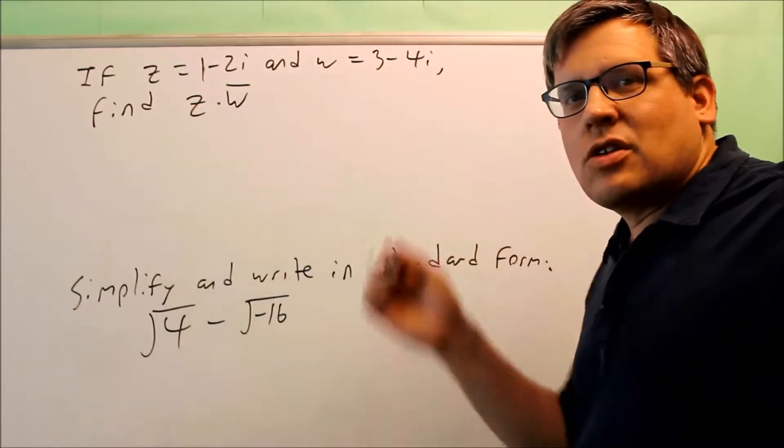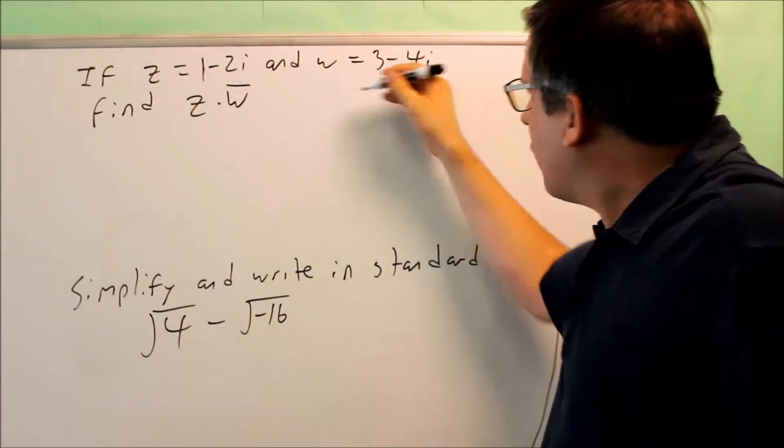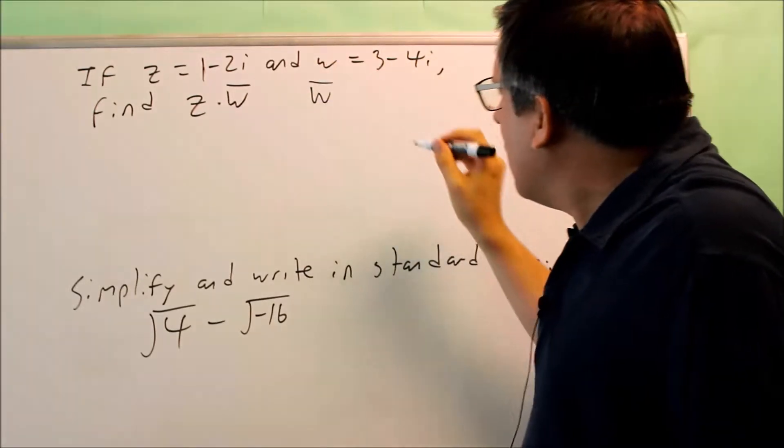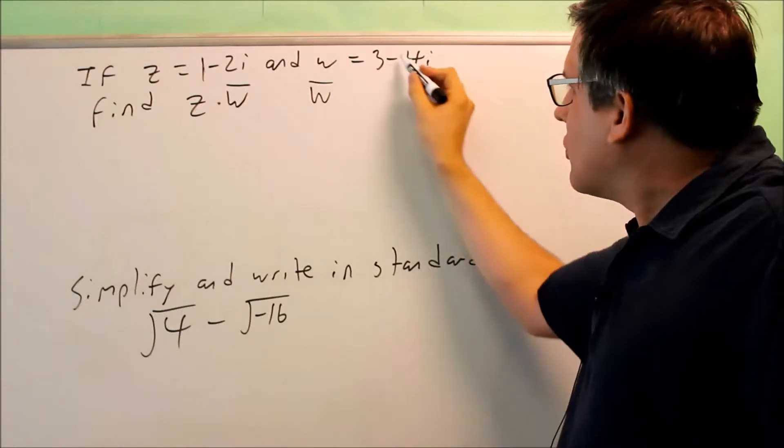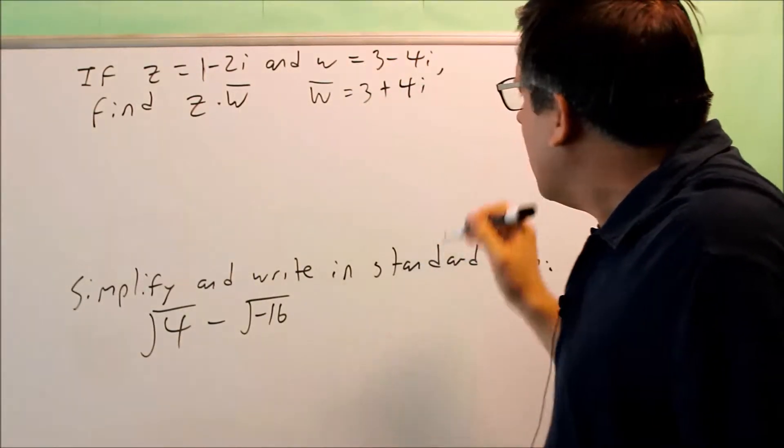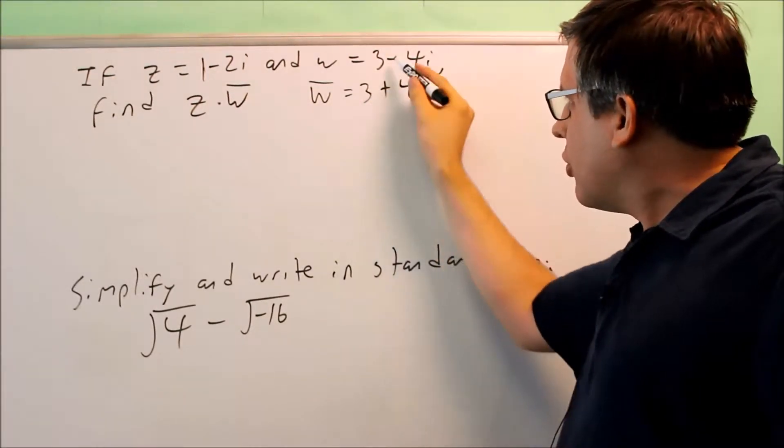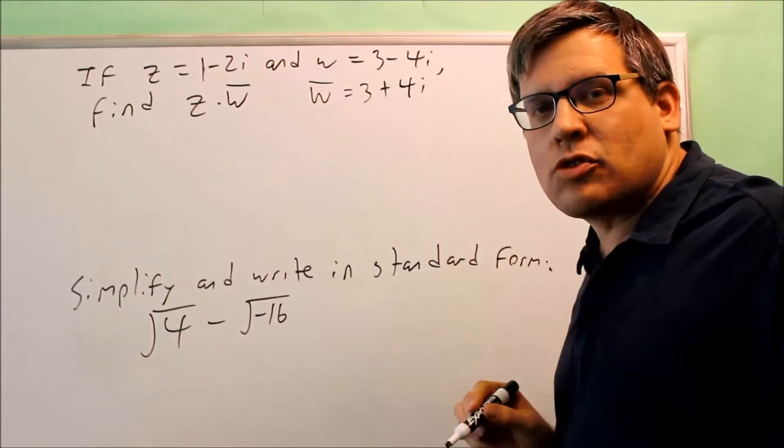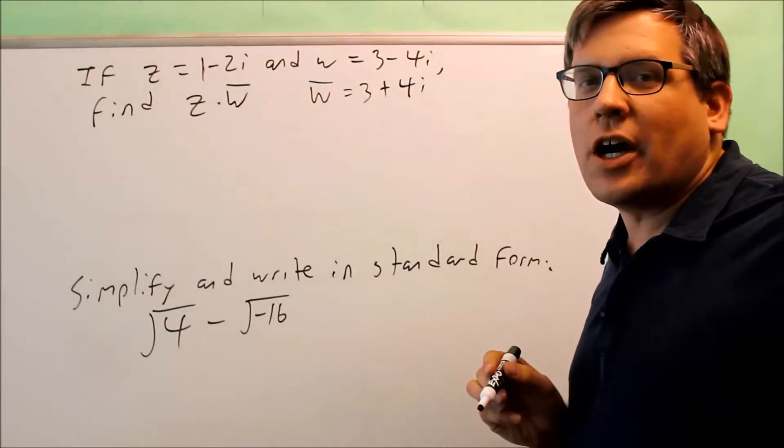That notation actually means the conjugate of w. So if w is equal to 3 minus 4i, a conjugate would be the same numbers, except the only thing that we're going to change is the middle sign. So that would be 3 plus 4i. You don't change the first one at all. You don't do anything with the 3. All you're doing is you're changing the sign that's in between those. So if it's minus, it's plus. If it was originally plus, then you would change it back to a minus.